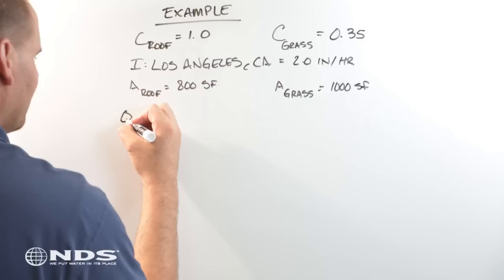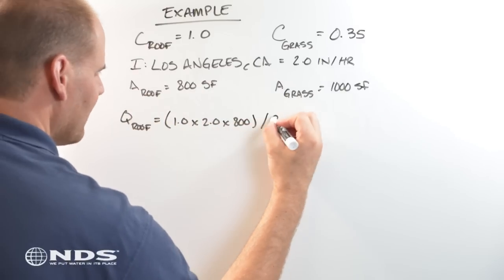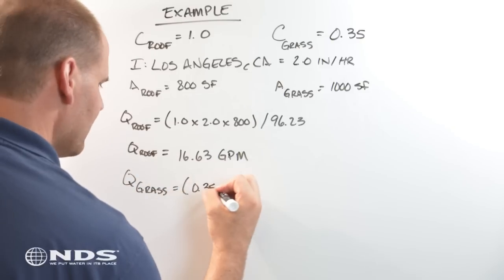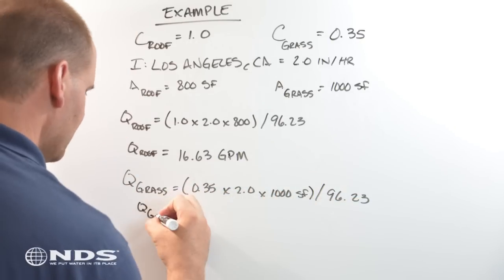The runoff from the roof will be 16.63 gallons per minute, and the runoff from the grass will be 7.27 gallons per minute.